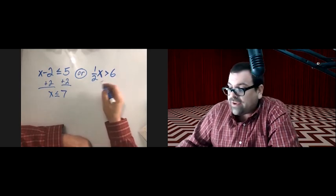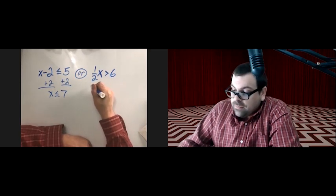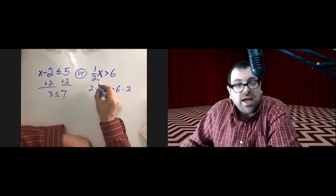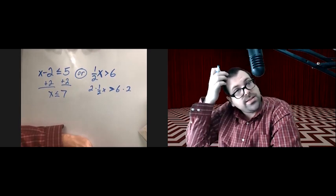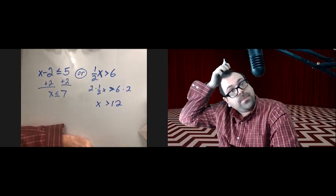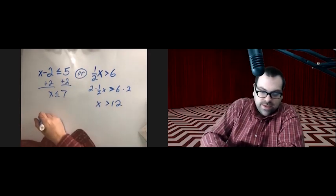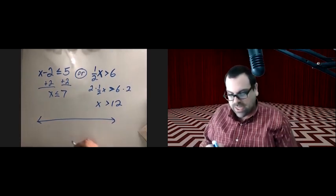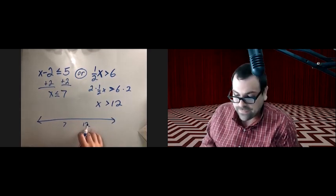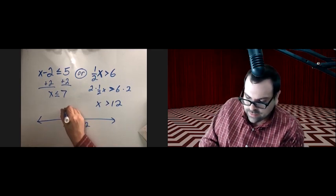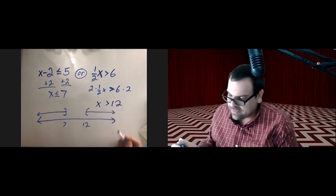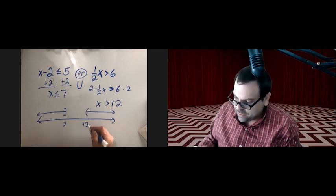For one-half x greater than 6, we multiply both sides by 2 — the reciprocal of one-half — which leaves us with x greater than 12. The OR statement takes both individual solutions. On the number line with 7 and 12: less than or equal to 7 goes to the left, greater than 12 goes to the right. OR is a union — both together.